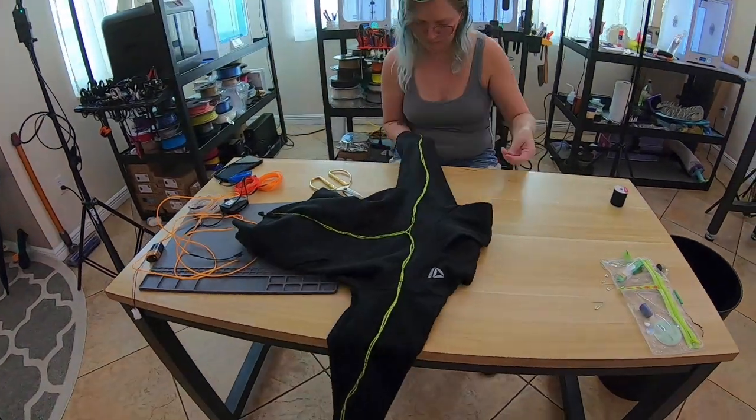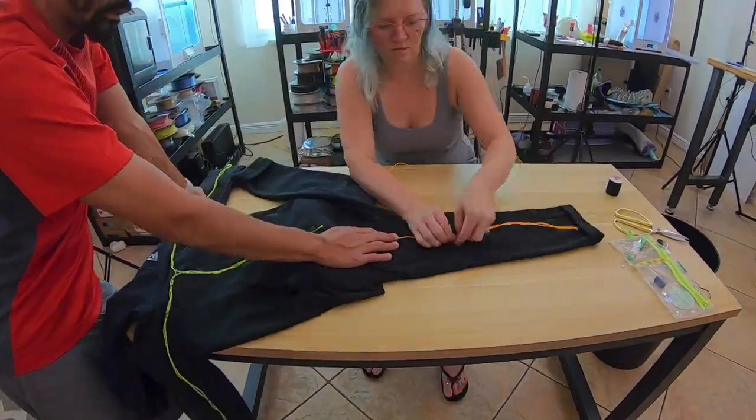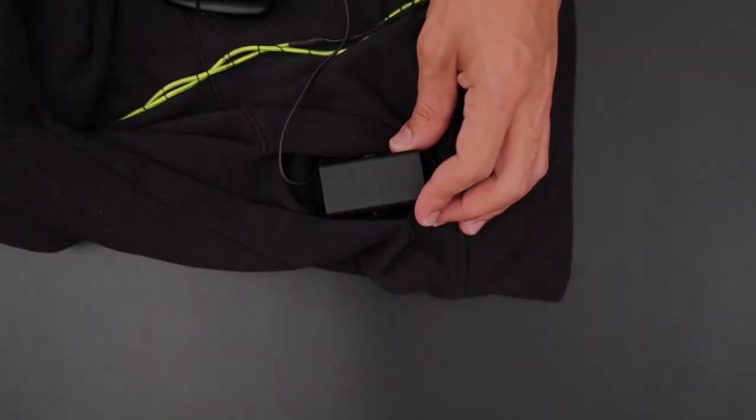Start by laying out the EL wire over your attire to map out the form. Then use a needle and thread to stitch the EL wire to the apparel.